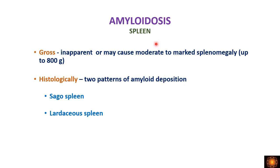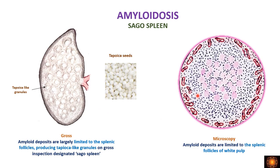Coming to the spleen, it is increased in size with moderate to marked splenomegaly, which may weigh up to 800 grams. Histologically there are two patterns of amyloid deposition in the spleen, giving two types: sago spleen and laudaceous spleen. In the sago spleen — sago meaning tapioca — the cut section shows numerous small nodules resembling tapioca seeds.